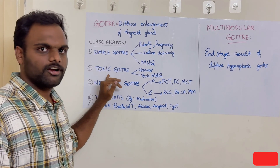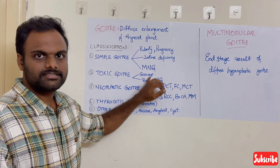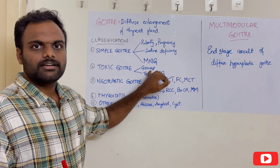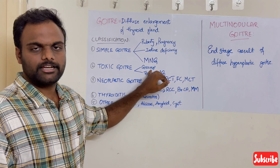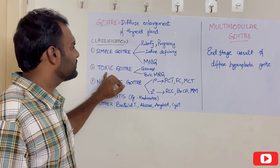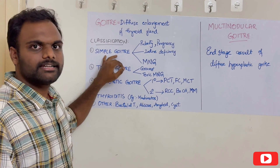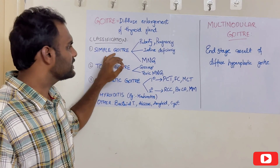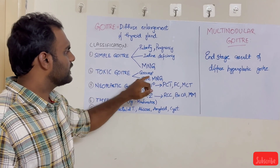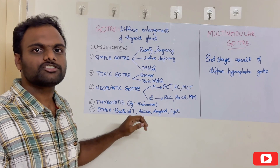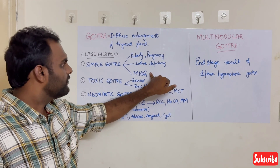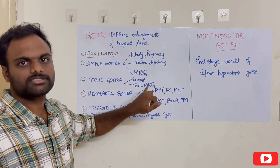Let us now see what is toxic goiter. Toxic goiter includes Graves' disease and toxic multinodular goiter. Graves' disease is the most common cause of hyperthyroidism or thyrotoxicosis, and the second most common is toxic multinodular goiter. When simple goiter did not produce any excess amount of thyroid hormones, toxic goiter produces excess amount of thyroid secretions, so thyroid excess will be there in the circulation. When multinodular goiter, which was not producing excess thyroid hormones, turns to produce thyroid hormones, then it becomes toxic multinodular goiter.